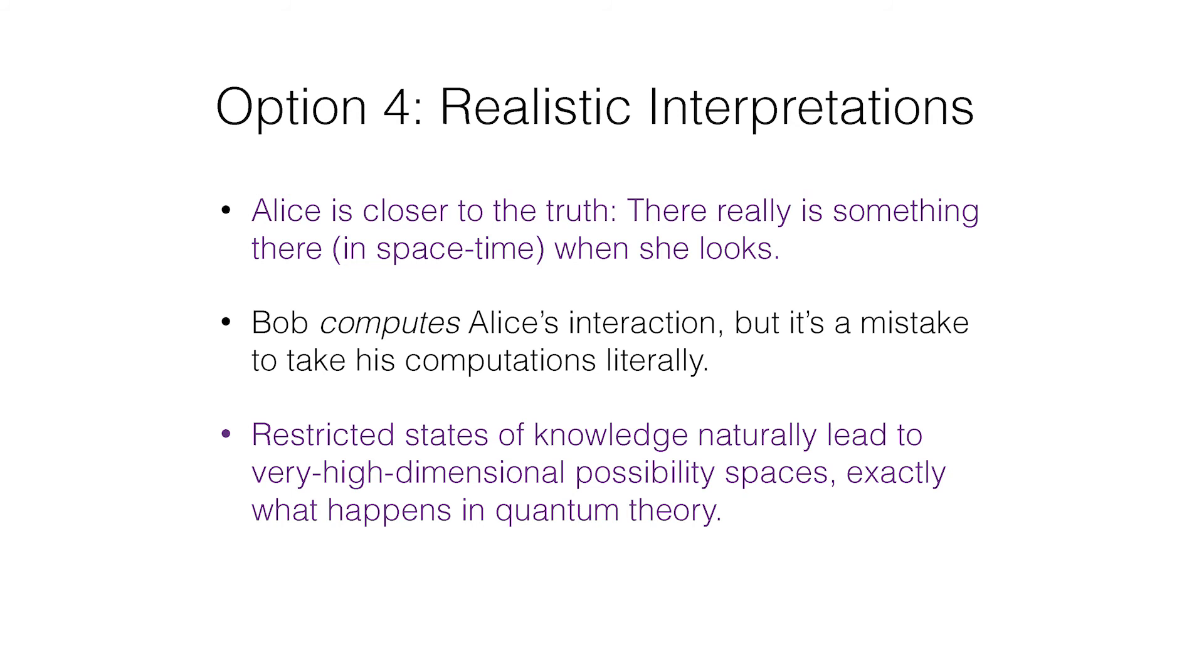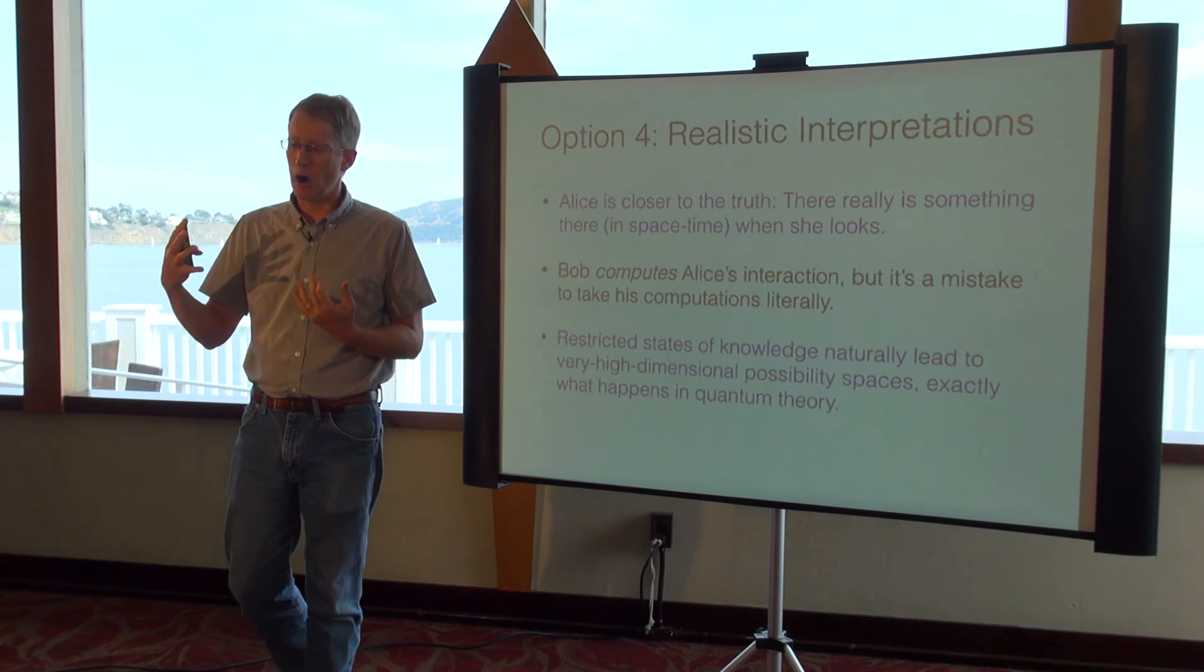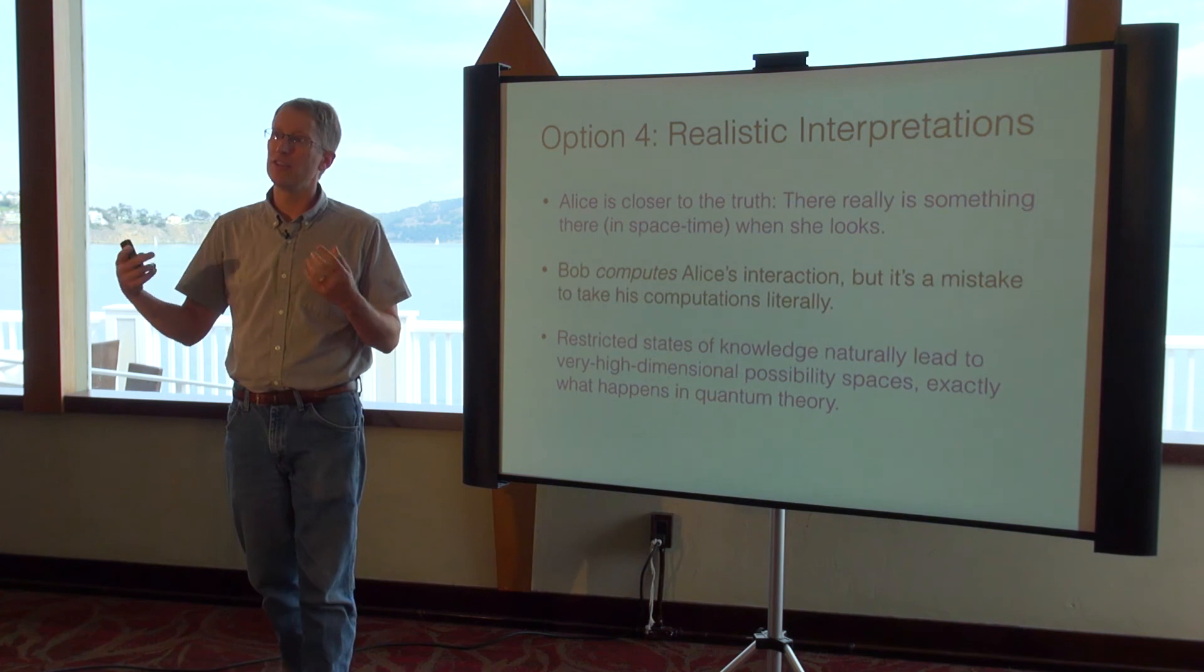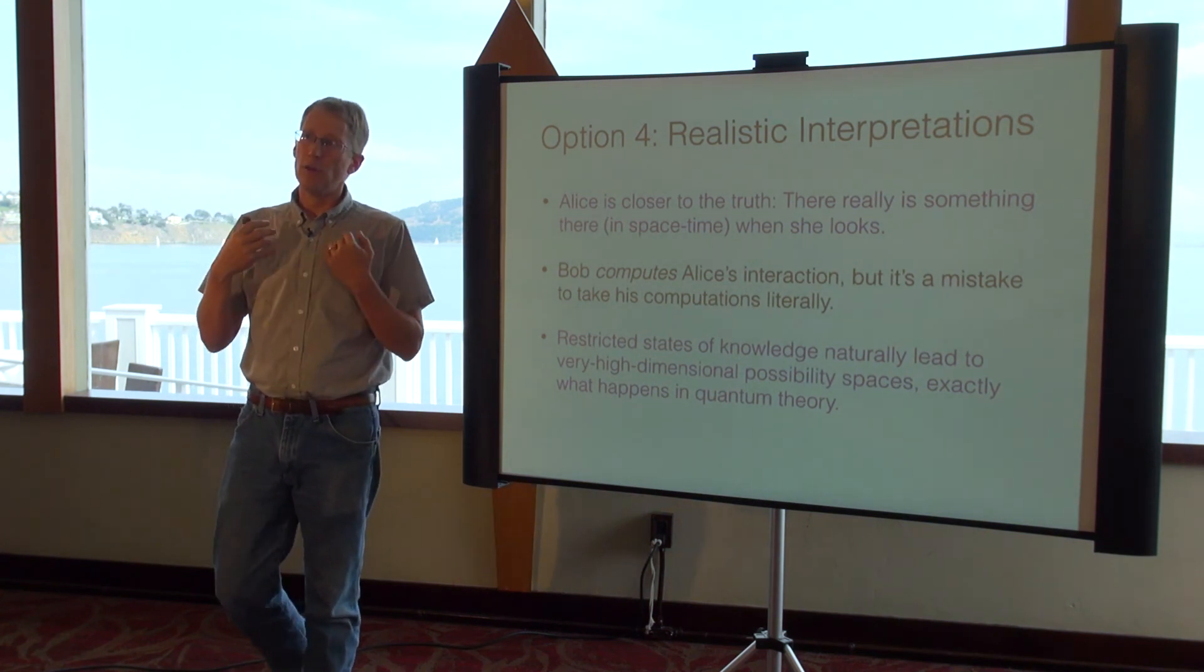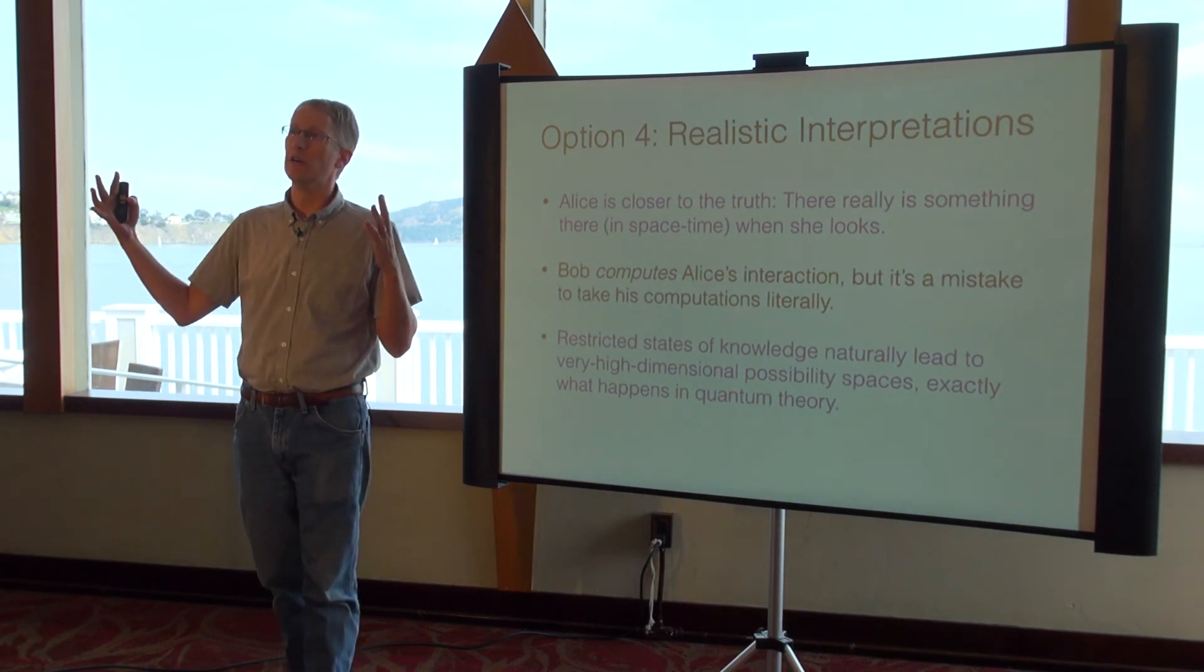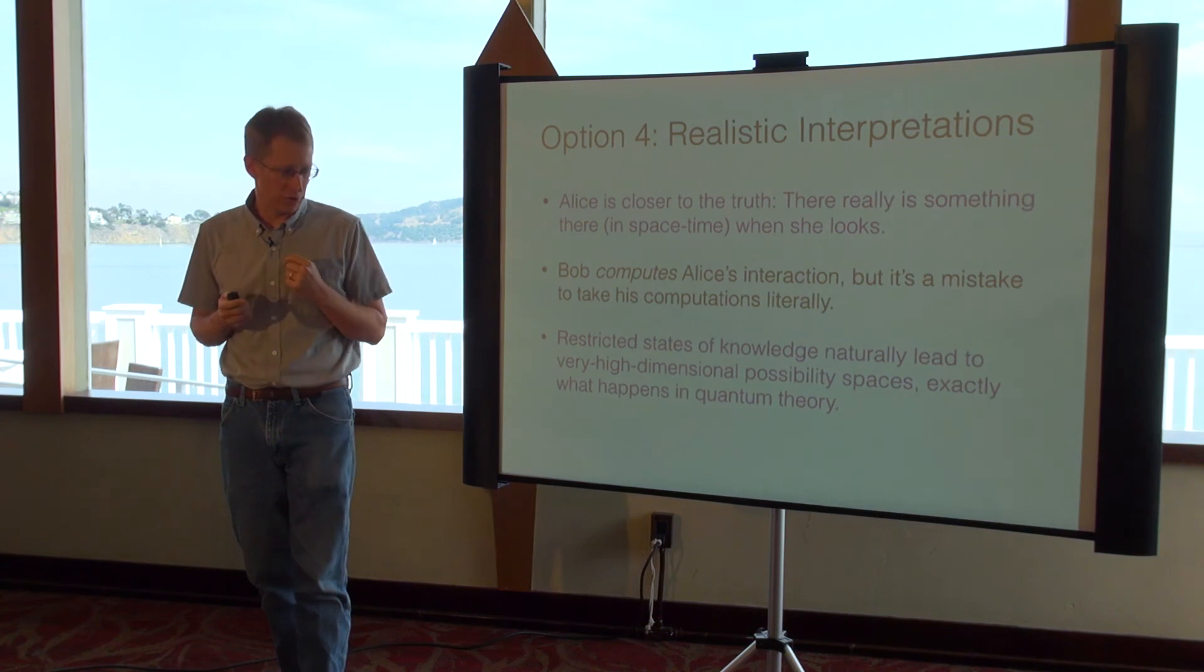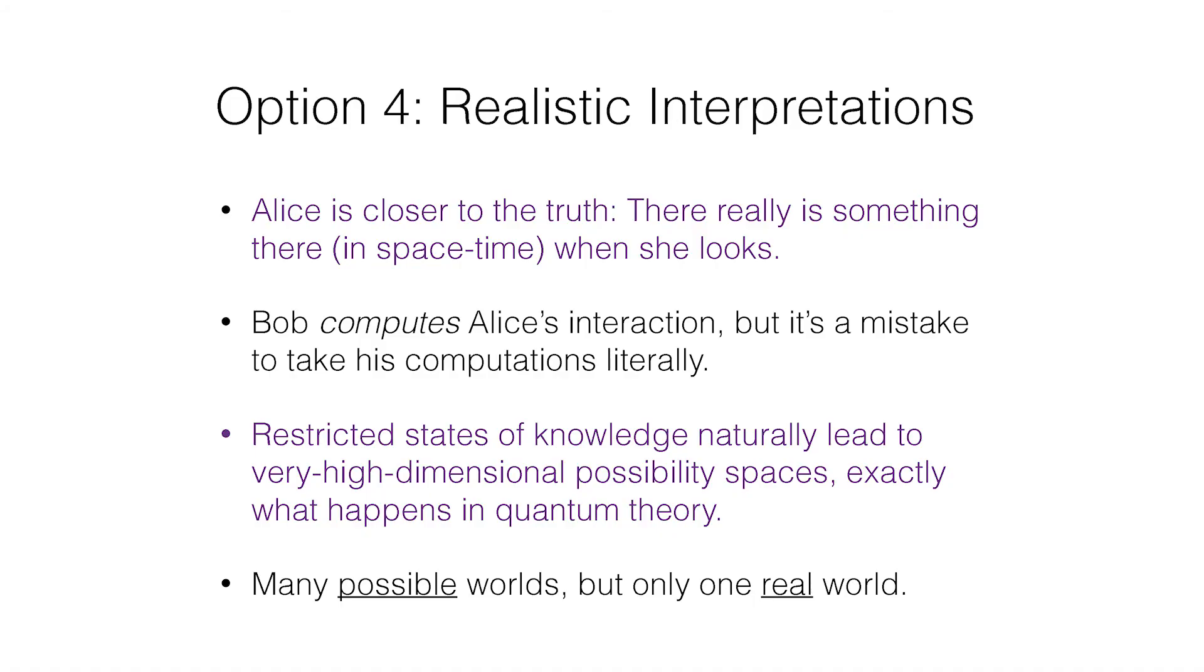If you have a restriction on your knowledge, it turns out that the possibility space expands exactly the way this configuration space expands in quantum theory. I find this a little bit telling. As you add more and more particles to a state of incomplete knowledge, you also grow your dimensionality in exactly the same way that Bob is calculating. But we don't take all the possibilities to be real in classical physics, and one might argue whether you have to take all of these configurations to be real in quantum physics. If Alice is right, then yes, Bob is computing many possible worlds, many possible configurations, but really there's only one real world and that lives in space and time.